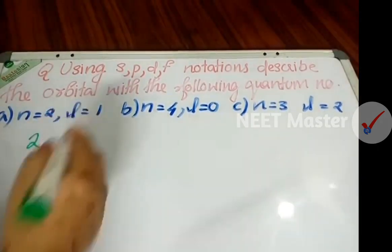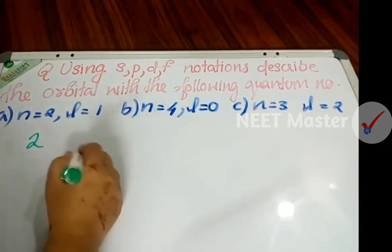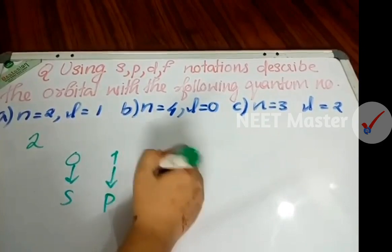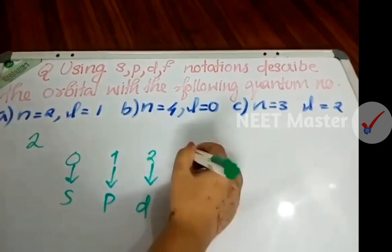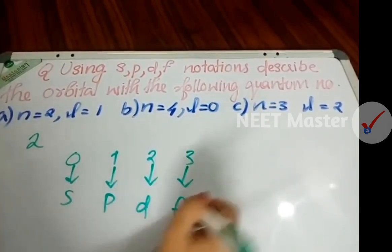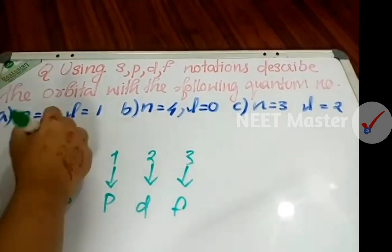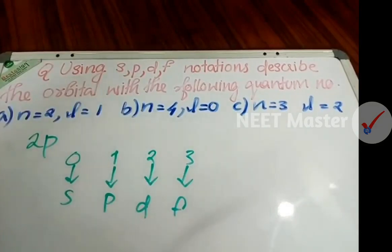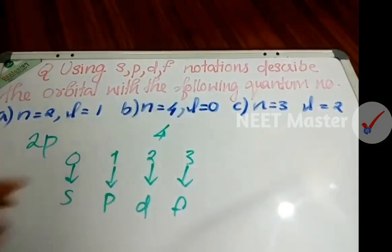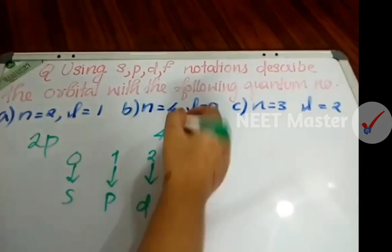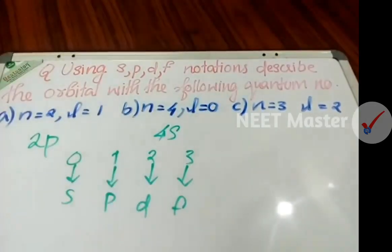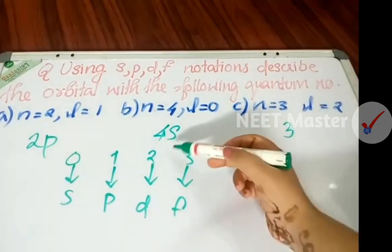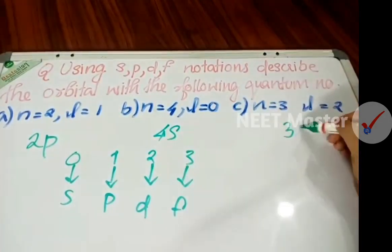l=0 is s, l=1 is p, l=2 is d, l=3 is f. So n=2, l=1 corresponds to 2p. For n=4, l=0, that is 4s. For n=3, l=2, that is 3d.